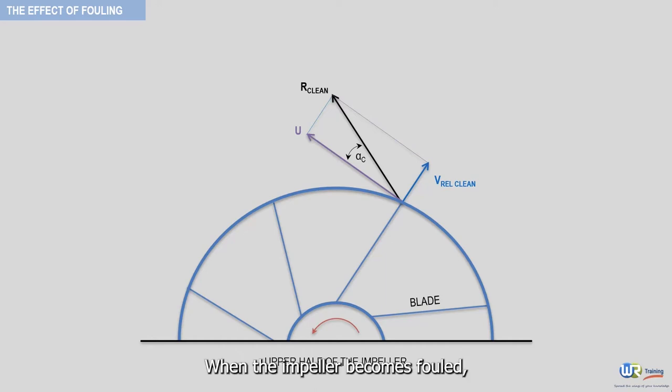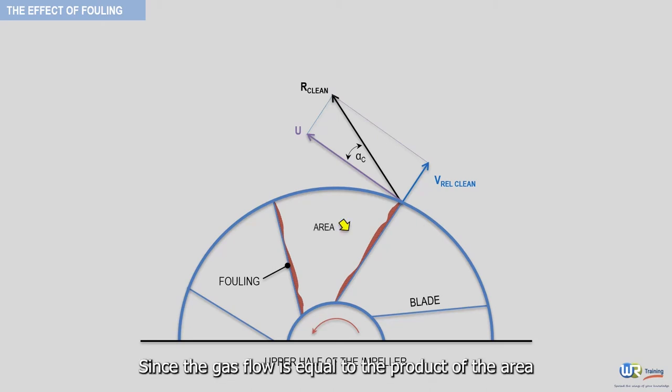When the impeller becomes fouled, the area of the flow passage is reduced. Since the gas flow is equal to the product of the area and the gas velocity, a decreasing area will result in an increasing velocity for a given flow. This is illustrated in red with the vector v relative fouled.